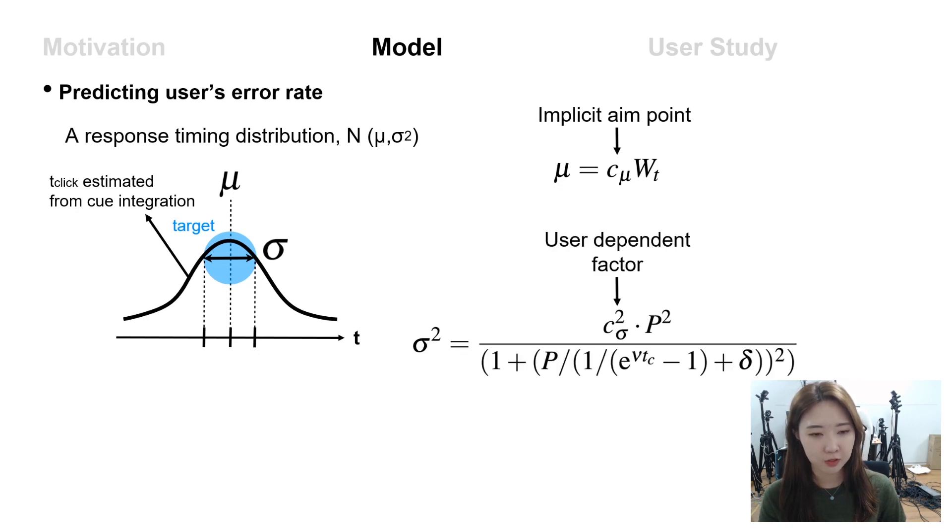The sigma squared represents a variation of the distribution, and C sigma means the influence of the user on the precision of the timing estimation.